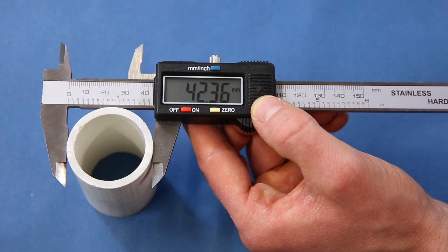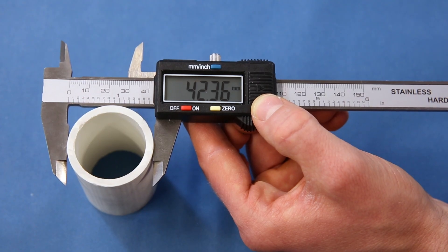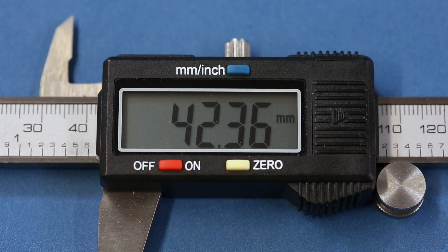When you have the measurement you want, you can tighten the lock screw so you can look more closely at the scales. Now that we have our calipers locked to the measurement we want, let's take a look at how to read them.